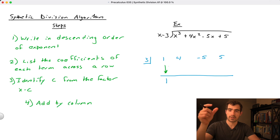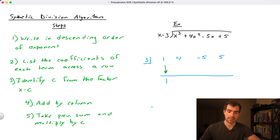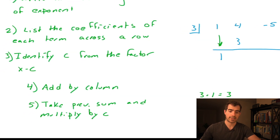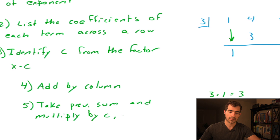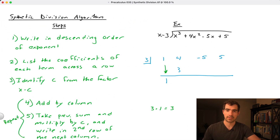The second step is to take the previous sum and multiply it by c, then write that result in the second row under the next column. In our case, c is 3 and the sum was 1, so 3 × 1 = 3, which we write in the second row of the next column. These two steps — add down, then multiply by c — repeat all the way through until we've reached the last column.